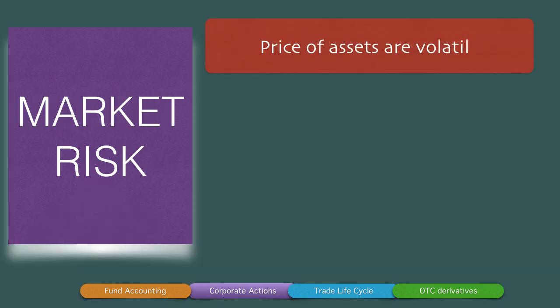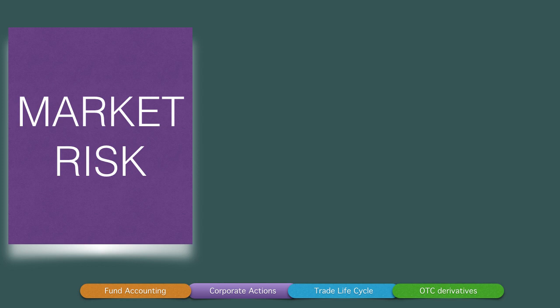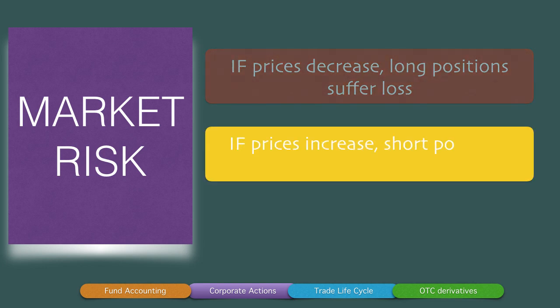Let's now take a look at market risk. Banks extensively trade in treasury bills, bonds, foreign exchange, derivatives, etc. The prices of these assets are extremely volatile, and fluctuations in prices could result in significant losses for the bank if the trading position is on the wrong side. Banks take trading positions in government securities, bonds, and foreign exchange, and are thus exposed to market risk. If prices decrease, the long positions suffer a loss — for example, if you've bought USD against INR and the price of the base currency USD decreases, you are long on USD and therefore incurring a loss.